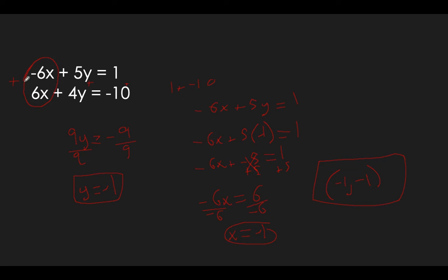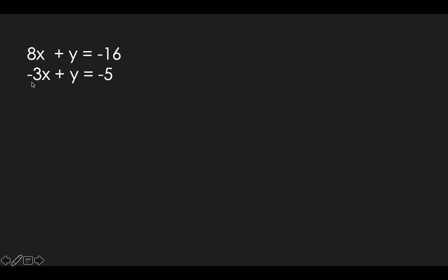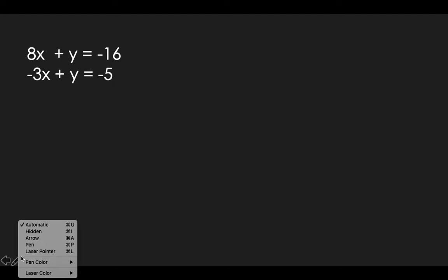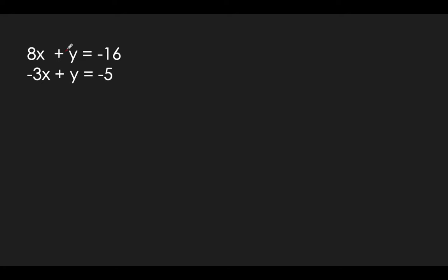You'll have two problems just like that where right away they'll eliminate. Now let's look at this next one. We want to eliminate a variable, but if you look, this is a positive 1y and a positive 1y. So if you added these, they wouldn't cancel out — it would be 1 plus 1, which is 2y. There are a couple things we could do. First, we could multiply an entire equation by negative 1, and that's what we're going to do.